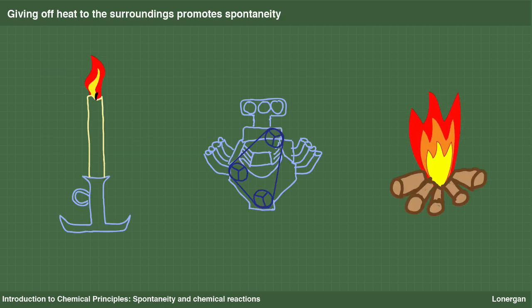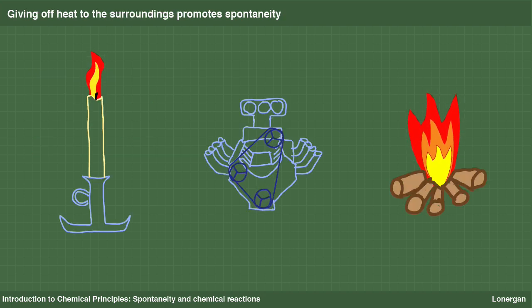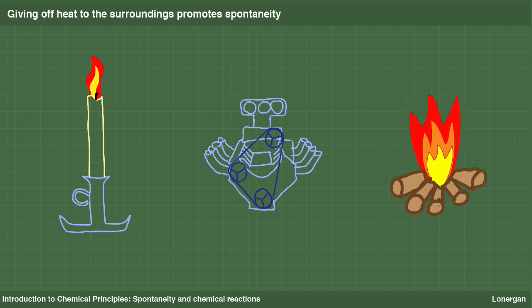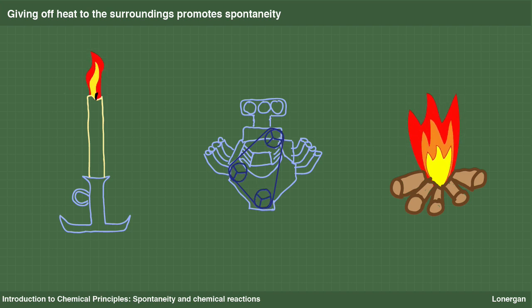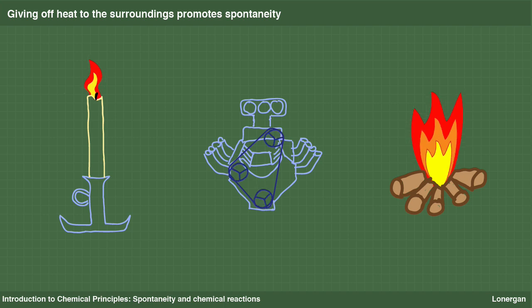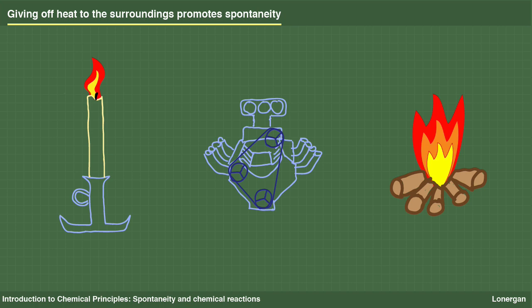From everyday observations, we can gain some insight into what makes a process spontaneous. Many familiar spontaneous processes give off heat to their surroundings as they occur. Simple examples are burning a candle, or the gasoline in your engine, or the wood on a campfire. Transferring heat to the surroundings is one criterion for a spontaneous process.